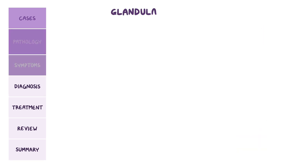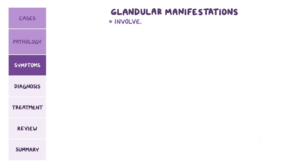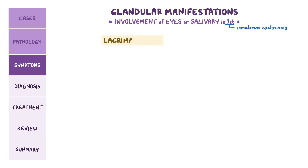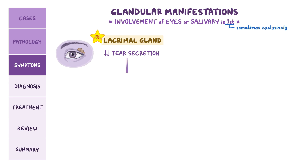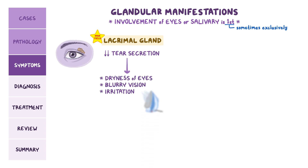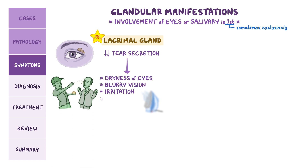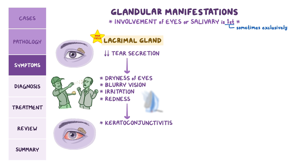First up are glandular manifestations, where involvement of the eyes or salivary glands occurs first, and sometimes exclusively. Lacrimal gland involvement results in decreased tear secretion, which leads to dryness of the eyes, blurry vision, irritation — described as a sensation of sand in your eyes — redness, and ultimately to keratoconjunctivitis, which is inflammation and ulceration of the cornea and conjunctiva.